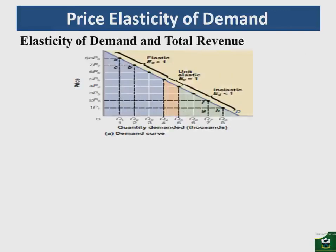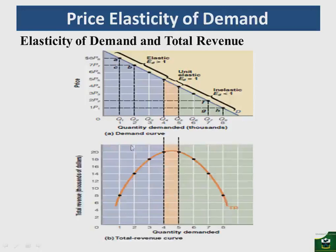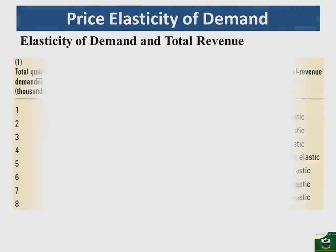From a graphical point of view, the elastic region is in the upper portion of the demand curve and the inelastic region is in the lower portion, with unit elastic in the middle. When demand is elastic, total revenue is increasing. Total revenue is at its maximum when demand is unit elastic, and when demand becomes inelastic, total revenue is falling. This describes the relationship between demand elasticity and total revenue.